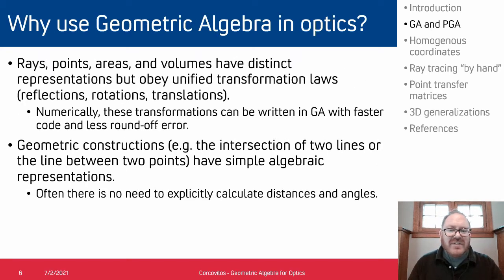So why would we want to use this in optics? Well, some nice things happen. So rays, points, areas and volumes—they have distinct representations in geometric algebra but they obey unified transformation laws. In other words, reflections, rotations and translations are represented the same way for each of these geometric objects. It has some nice numerical advantages, so these transformations can often be written with faster code and less round-off error than more conventional methods.